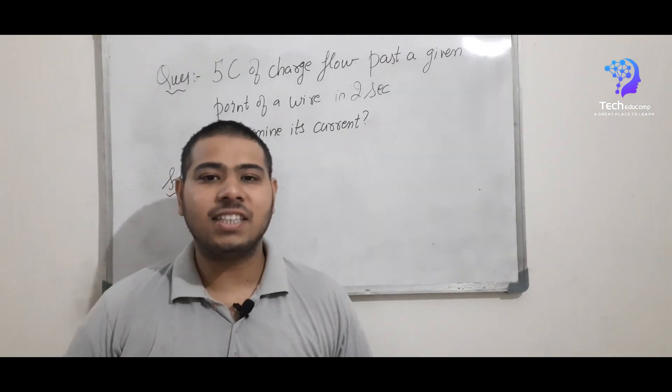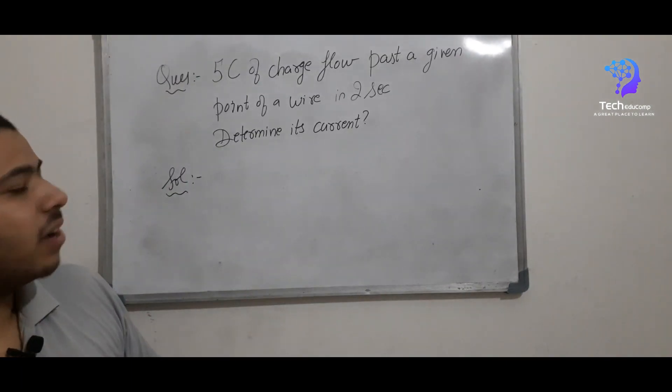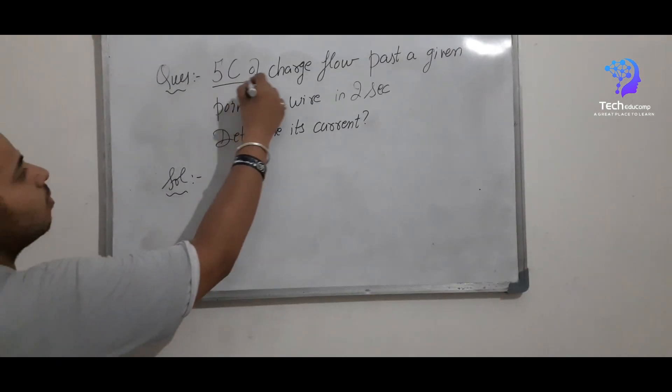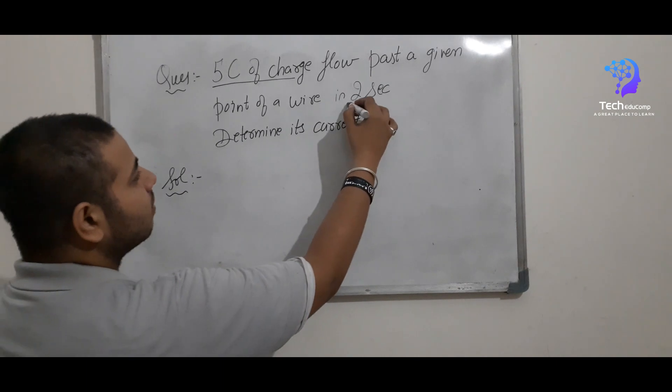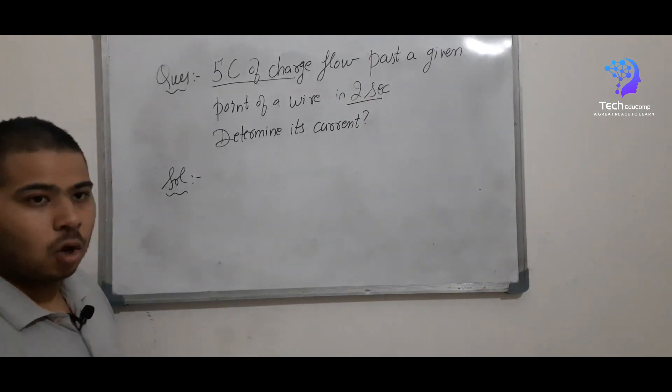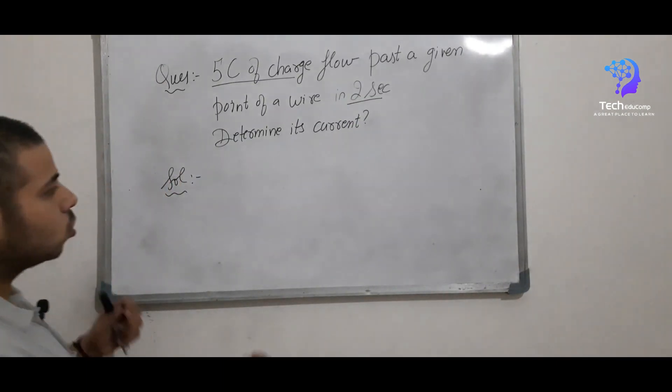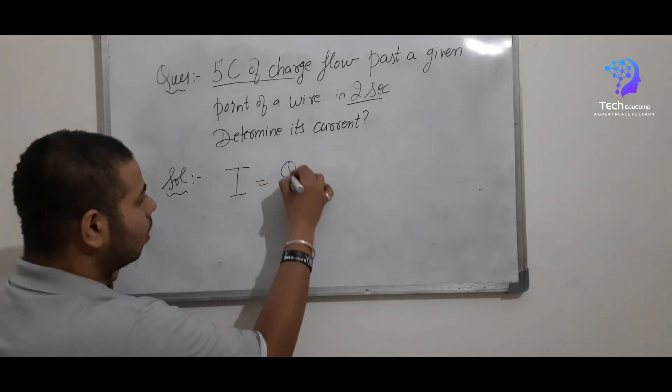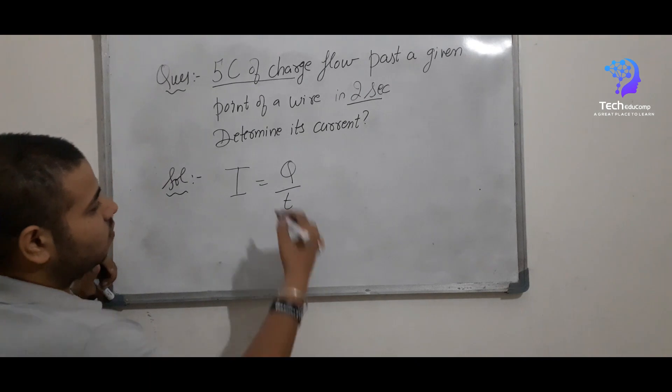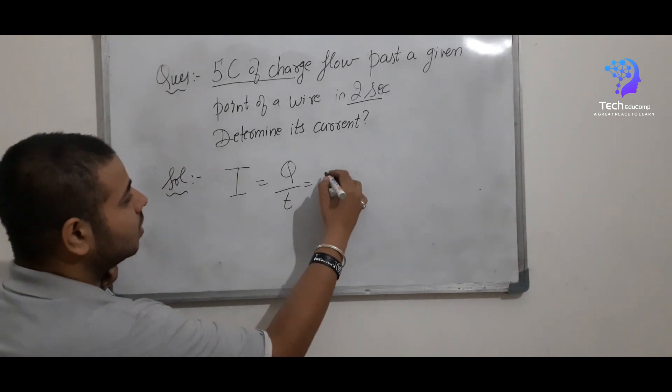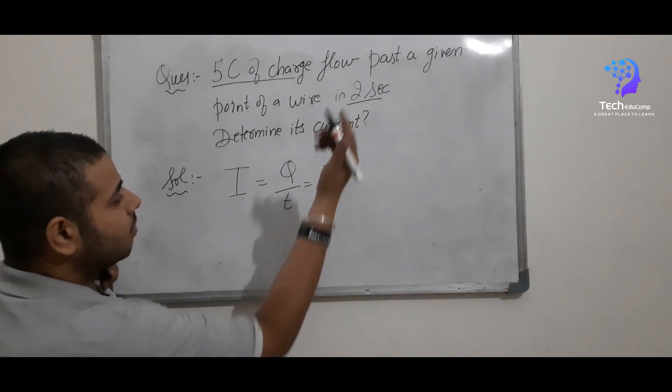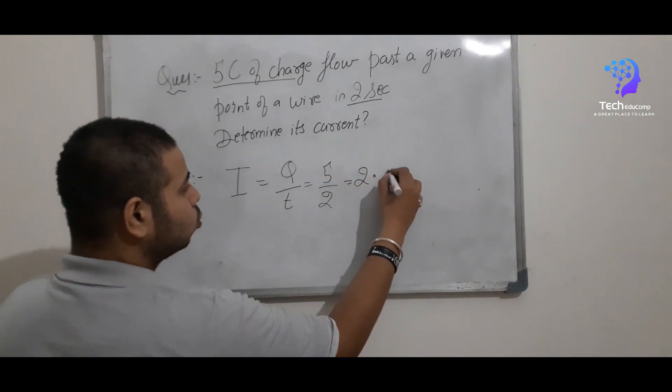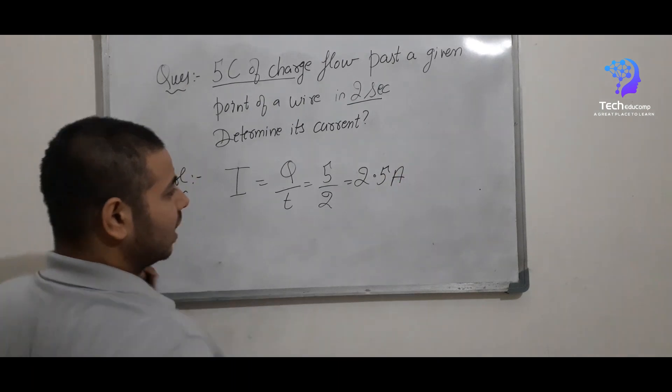So it is a very simple question. Two things we have given and we have to find the third one. So what we have given? We have given 5 coulomb of charge and we have given time 2 seconds. We have to simply find the current. So we know the formula of the current, capital I equal to q by t. We know the value of charge is 5 coulomb and we know the time is 2 seconds. So by dividing it, we will get current that is 2.5 ampere.